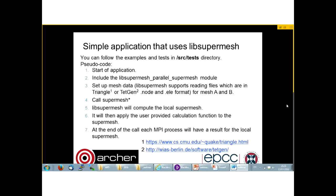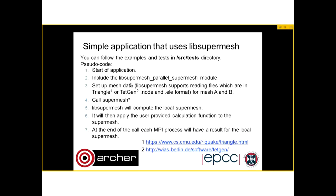To use LibSuperMesh in your application, you compile LibSuperMesh, include the lib_supermesh_parallel_supermesh module, set up mesh data — LibSuperMesh supports triangular or nodal and element formats — and then call supermesh. To call supermesh you need three functions: one to pack, one to unpack, and one to perform calculations. Examples are provided in the manual. LibSuperMesh will then take over: it completes the local supermesh, runs the function you have provided, and at the end of the call each MPI process will have the result of the local supermesh. If you want a global result you need to perform the reduction yourself.